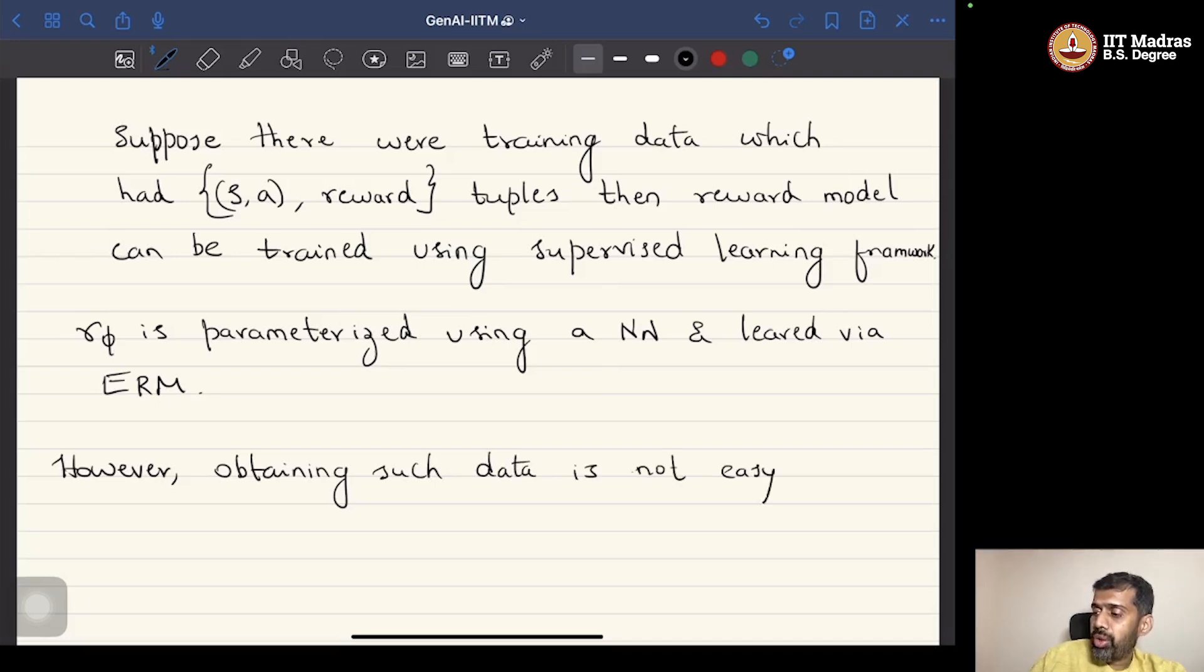Now, the other problem that comes up is that the idea of reward is very subjective. What might be a good response for a particular input for one person may not be the good response for the exact same input to a different person. So, it is very subjective. Obtaining a scalar score that would be normalized across several annotators is not trivial.